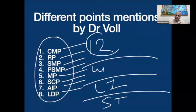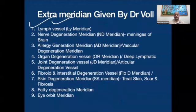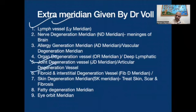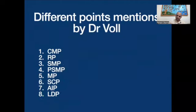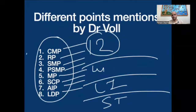All 12 acupuncture meridians are having these points, and also the 9 vessels like the lymph nerve vessel, nerve degeneration, allergy degeneration, organ degeneration, joint, fibroid, skin, fatty — all the meridians are having these points. So what is the exact meaning of these points? Today we will be discussing that.